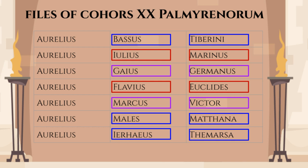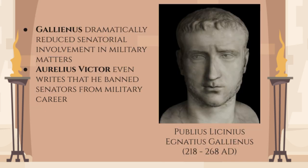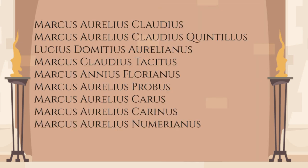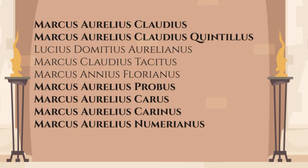With popularity like that, the name Marcus Aurelius was destined to come back to the Imperial Palace even after the Severan dynasty was extinguished. Indeed, when Gallienus removed the senatorial monopoly on major military commands, this combination made its way back from the barracks to the highest office. Six out of nine emperors between Gallienus and Diocletian bore the name Marcus Aurelius.